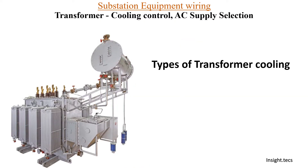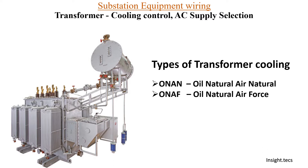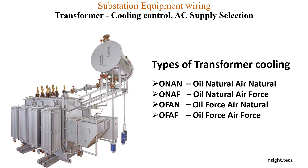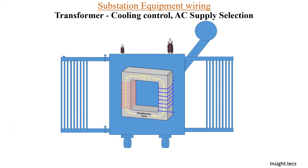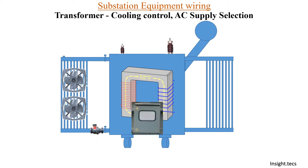The types of cooling systems we covered are: ONAN (oil natural air natural), ONAF (oil natural air forced), OFAN (oil forced air natural), and OFAF (oil forced air forced). You can check our previous video to see details about each of these cooling systems. We are using fans and pumps for the cooling of the transformer.